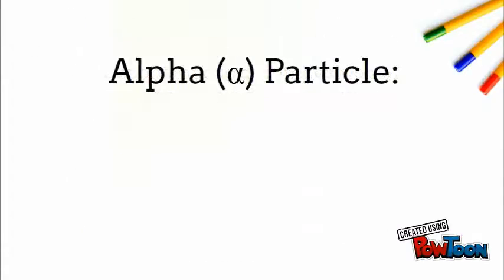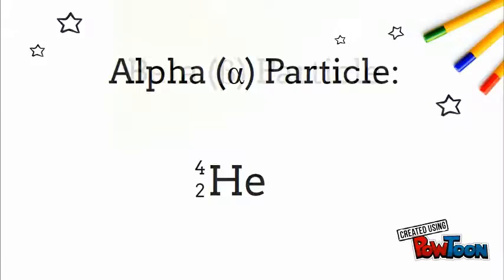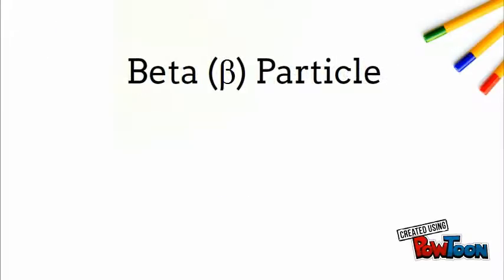One of the most common products is the alpha particle, which is a helium atom made up of two protons and two neutrons. It looks like this.